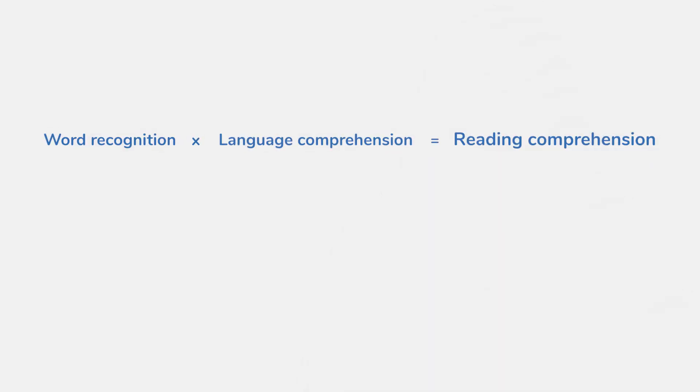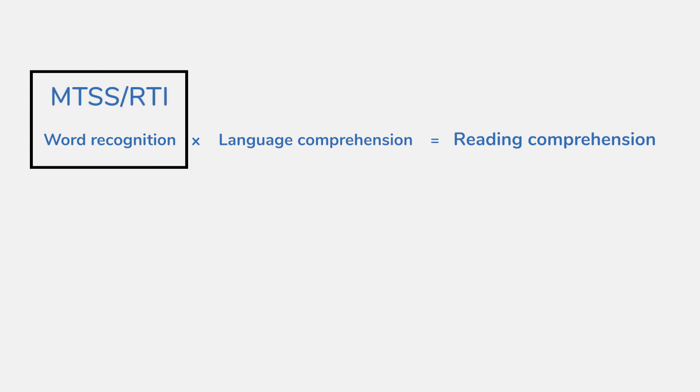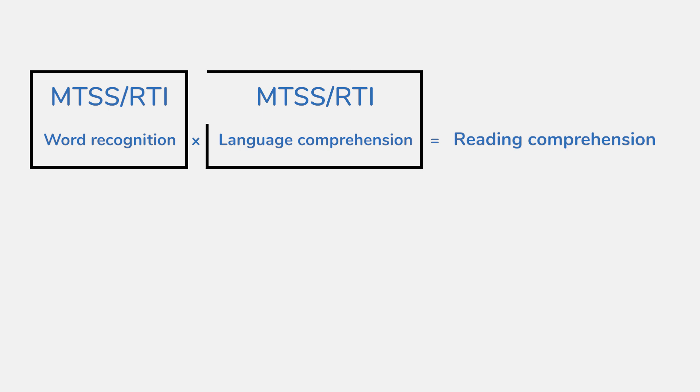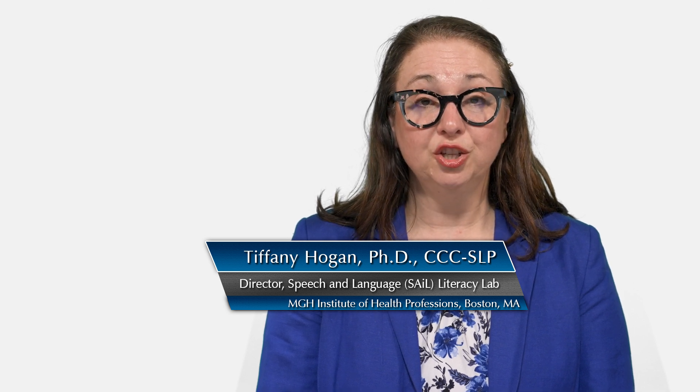Right now, educators are spending a good amount of time thinking about MTSS for one side of the simple view of reading around word reading, which is great. What we want to make sure is that we also have MTSS for the other side of the simple view of reading addressing language comprehension. Ensuring that we address both sides of the simple view of reading means that we will support children who have dyslexia, children who have DLD, and children who have both dyslexia and DLD.